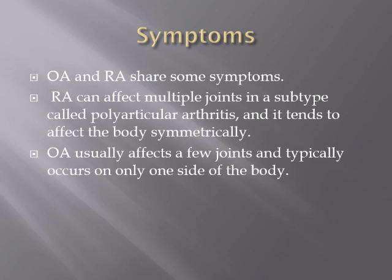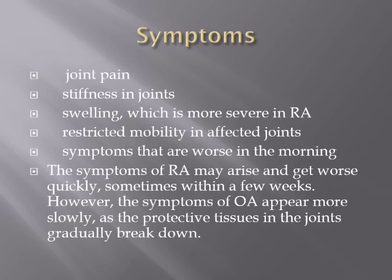Rheumatoid arthritis affects both sides and involves large joints, while osteoarthritis affects few joints on only one side. Shared symptoms include joint pain, stiffness, inability to move joints freely, swelling — more severe in rheumatoid arthritis — restricted mobility, and symptoms that are worse in the morning.